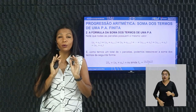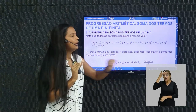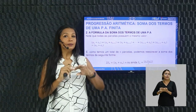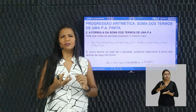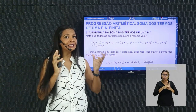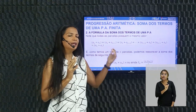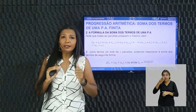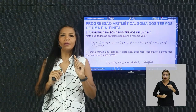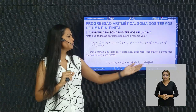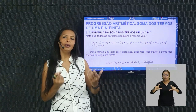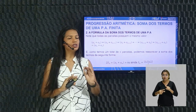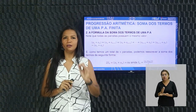As duas fórmulas que você não pode esquecer: a fórmula do termo geral — AN = A1 + (N-1)·R — e a fórmula da soma dos termos de uma PA — SN = (A1 + AN) × N ÷ 2. Essas duas fórmulas vão ajudar em qualquer exercício de PA. Vamos agora ver o primeiro exercício resolvido: calcular a soma dos 20 primeiros termos da PA 4, 6, 8, ...